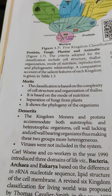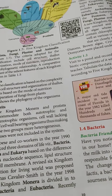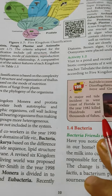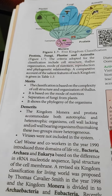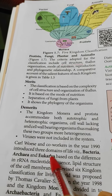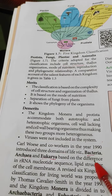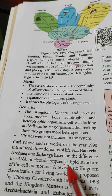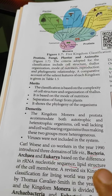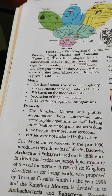After R.H. Whittaker in 1969, many other scientists came and proposed systems of classification. Carl Woese and co-workers in 1990 introduced three domains of life: Bacteria, Archaea, and Eukarya — based on differences in rRNA nucleotide sequence and the lipid structure of the cell membrane.